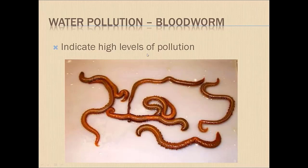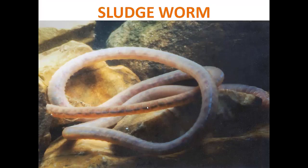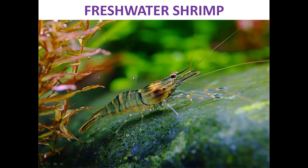Bloodworms indicate high levels of pollution — their presence signals polluted conditions. Sludge worms also indicate pollution and are found in badly polluted water with low oxygen content. Freshwater shrimp is another bio-indicator. This is the end of our topic for today.